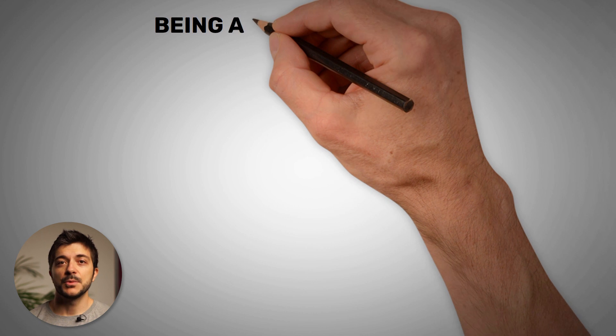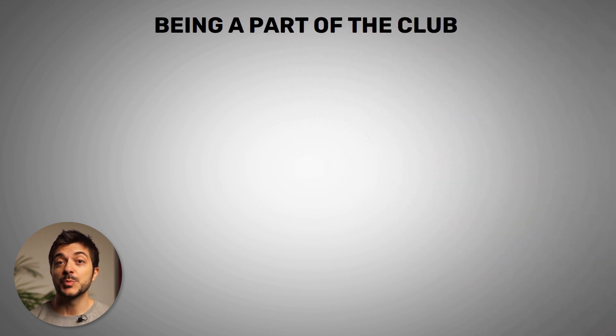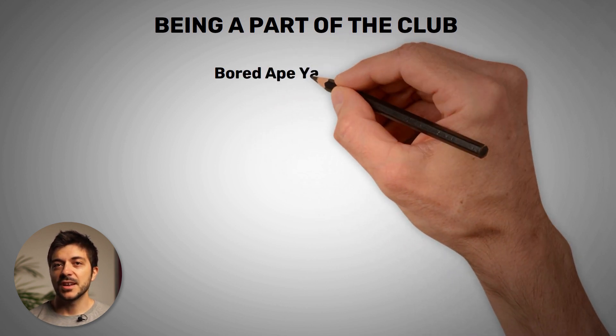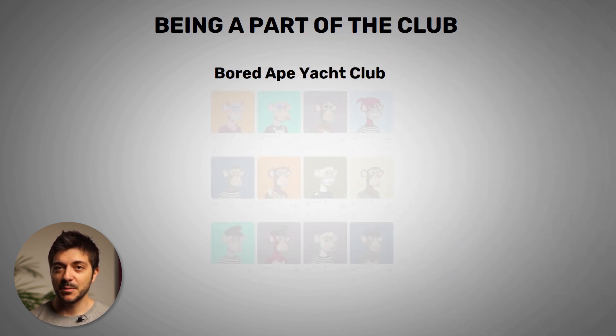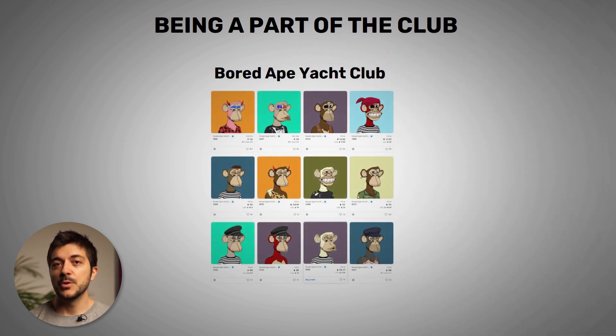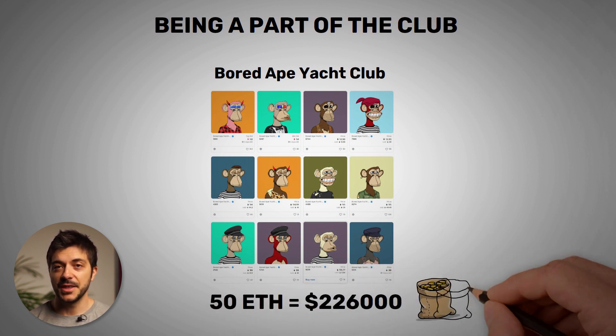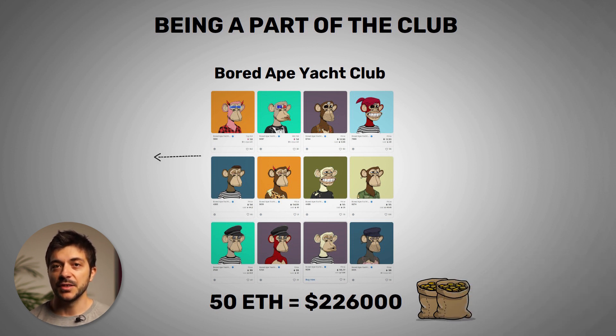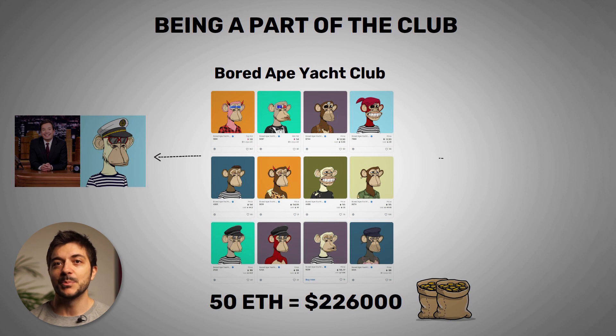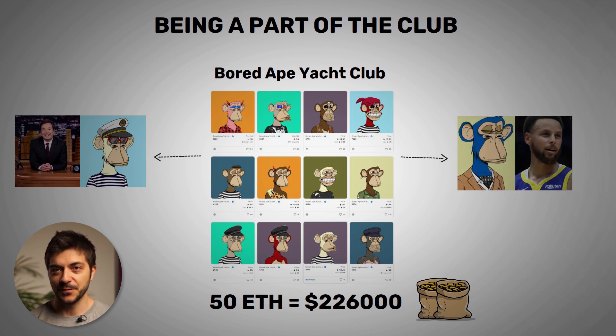The third reason why someone would value an NFT is because it represents being a part of an elite club or membership. For example the cheapest NFT at the time of this recording from one of the most famous NFT projects called Bored Ape Yacht Club is 50 Ethereum which is around 225 thousand dollars and believe it or not celebrities and famous people are buying these just to be a part of this movement and giving insane amount of money for it.